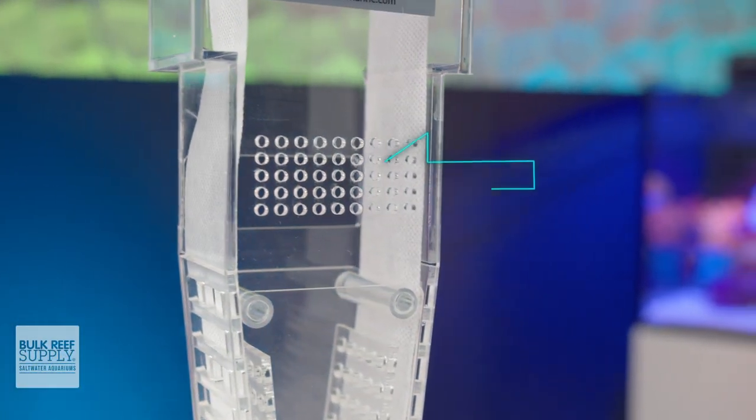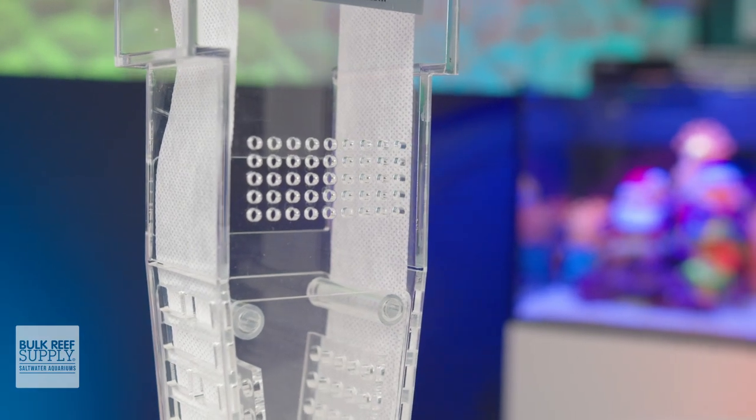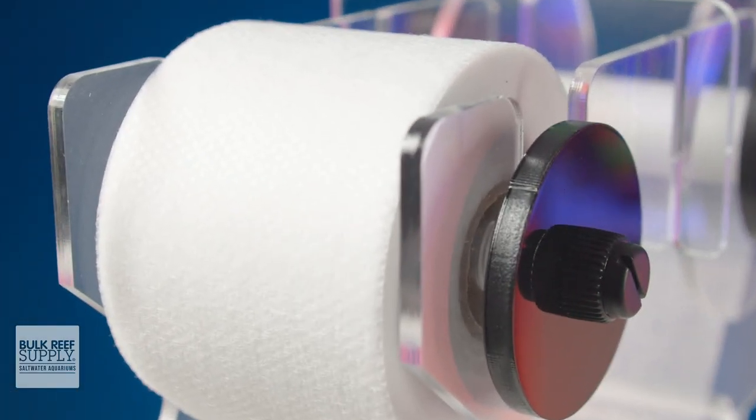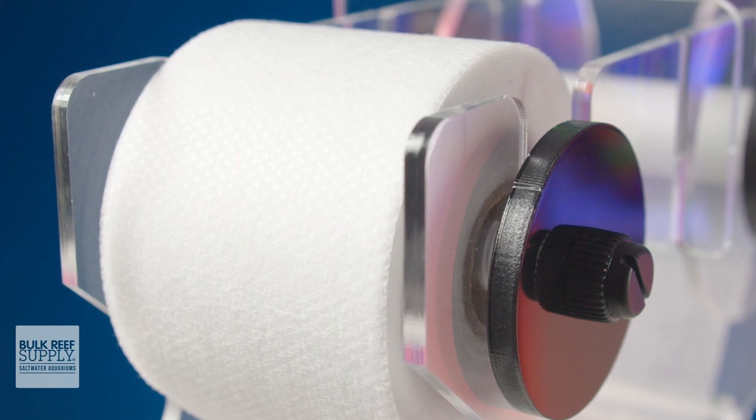With that said, if you do forget to roll up that dirty fleece, there are overflow ports at the back so the water can flow freely into the next section if it gets backed up. When you eventually use up all of that fleece, swapping it out for a new roll is also very easy.